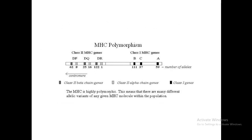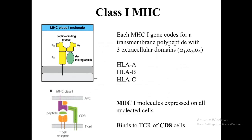Major histocompatibility complex genes are highly polymorphic. One of the reasons for this is that if a pathogen manages to evade the antigen-presenting process, if every individual in the population has a different version of the MHC, then the risk that the whole population will suffer is reduced by the fact that each individual has a slightly different version of that gene.